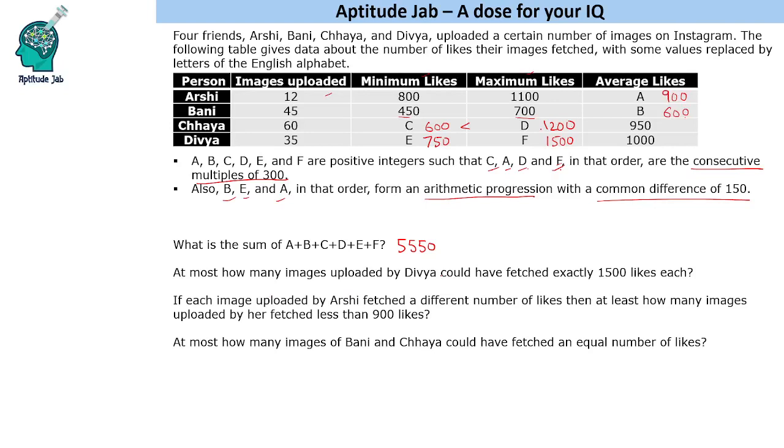At most, how many images uploaded by Divya could have fetched exactly 1500 likes each? We have to find the maximum number of images uploaded by Divya that could have given her 1500 likes. The best way to do this is by allegation, or you can use an equation also.